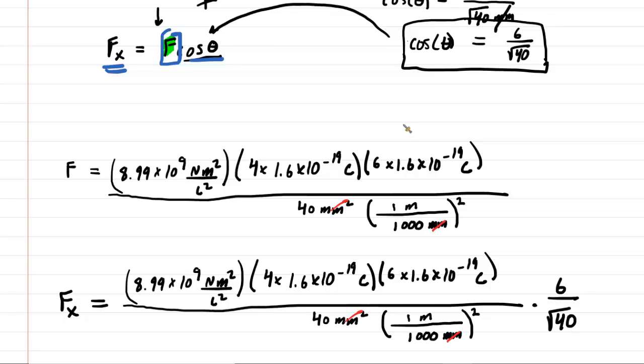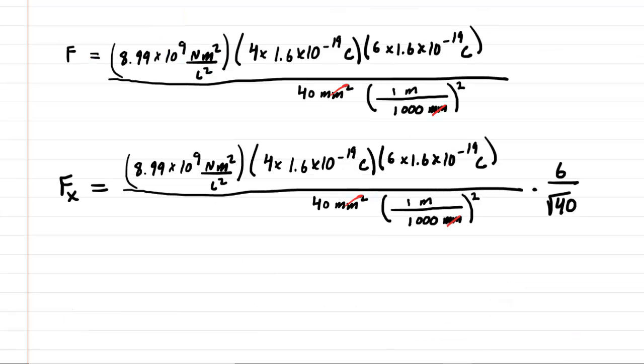Let's go ahead and compute that. And when we punch that very carefully into our calculators, we see that the x component of the electrostatic force on that particle is equal to roughly 1.31 times 10 to the negative 22. This will turn out to be in newtons. This is the correct answer to the question.